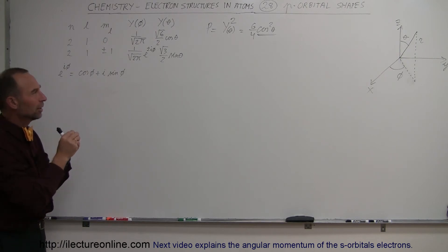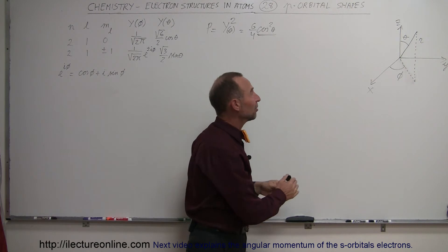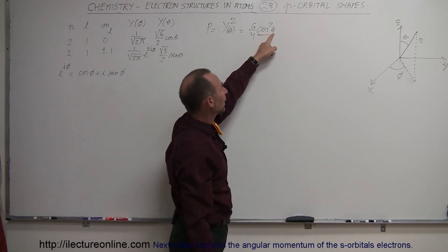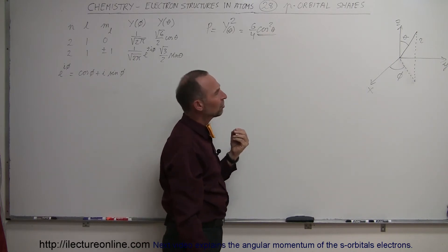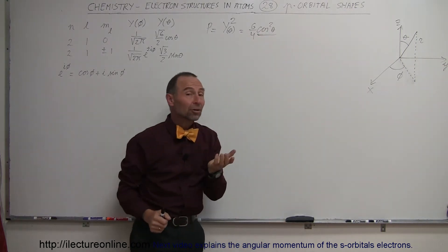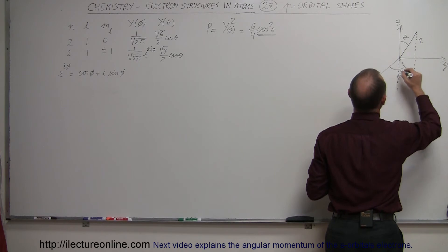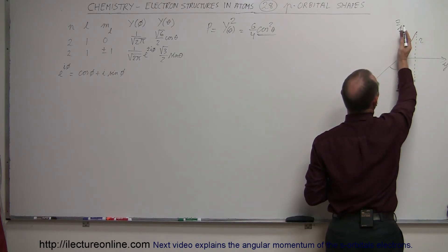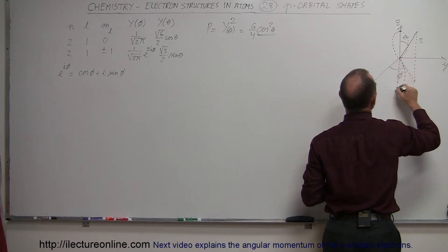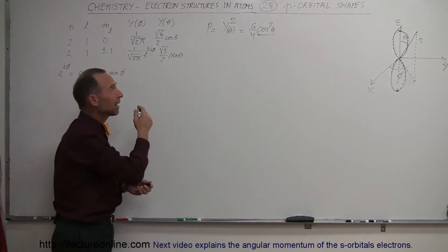The probability of finding an electron in the theta direction depends on the cosine of the angle. When the angle is 0, the cosine of 0 is 1, meaning along the z-axis we have the maximum probability of finding the electron. As the angle increases to 90 degrees, the cosine of 90 is 0, so there's zero probability in the y direction. At 180 degrees, cosine is minus 1, but squared gives 1, so maximum probability again along the negative z direction. Mathematically, this gives us the lobe shapes along the z-axis.